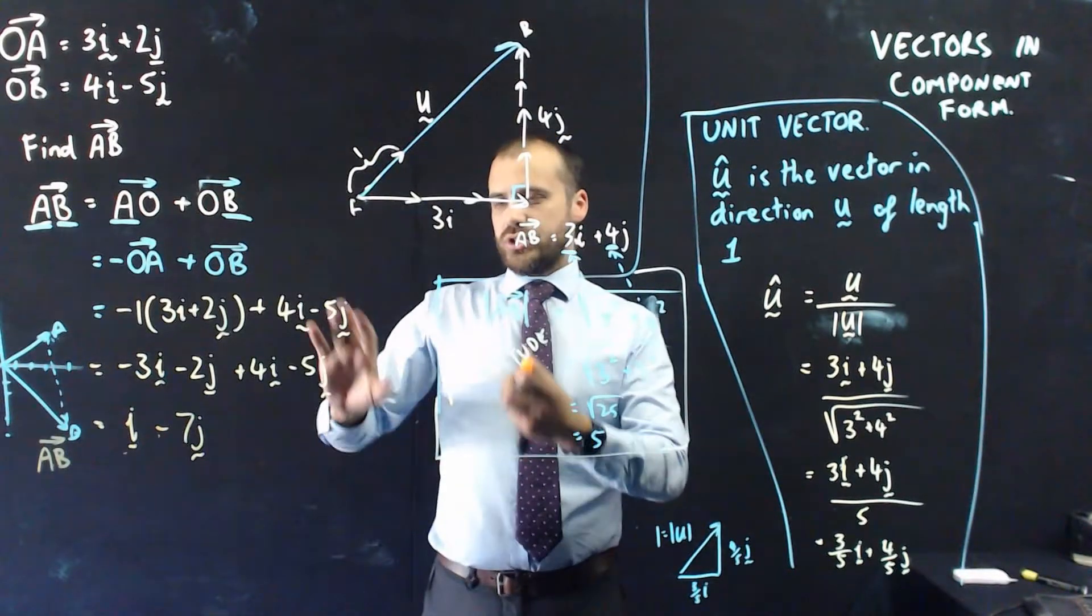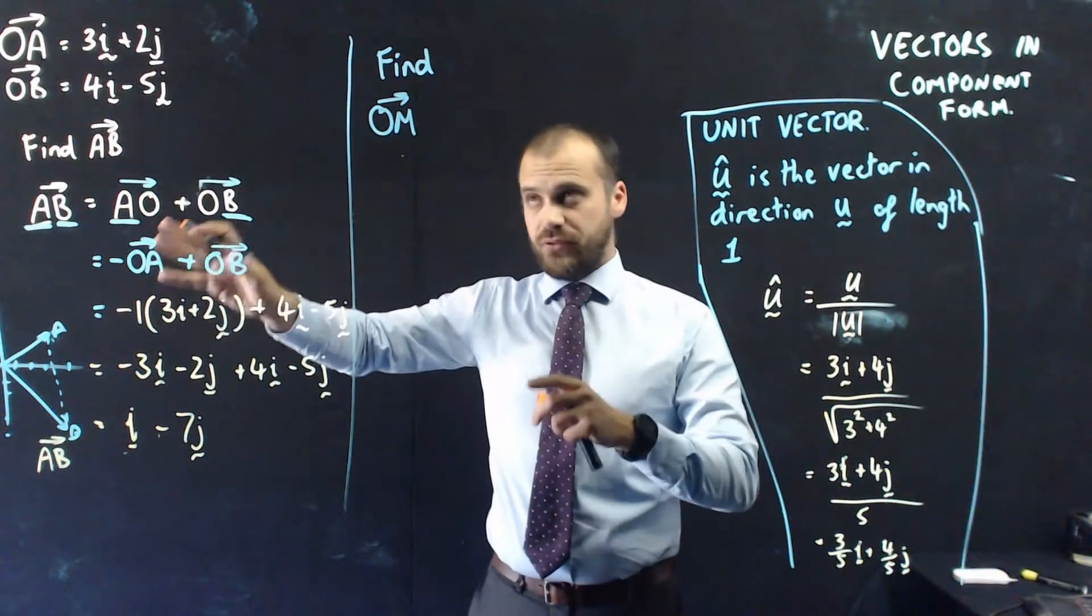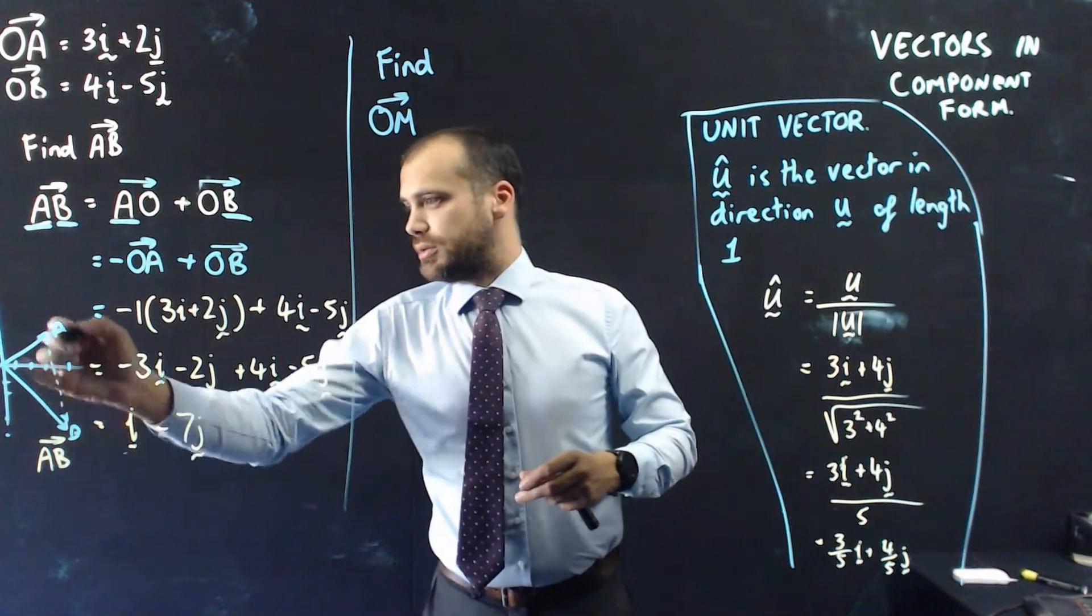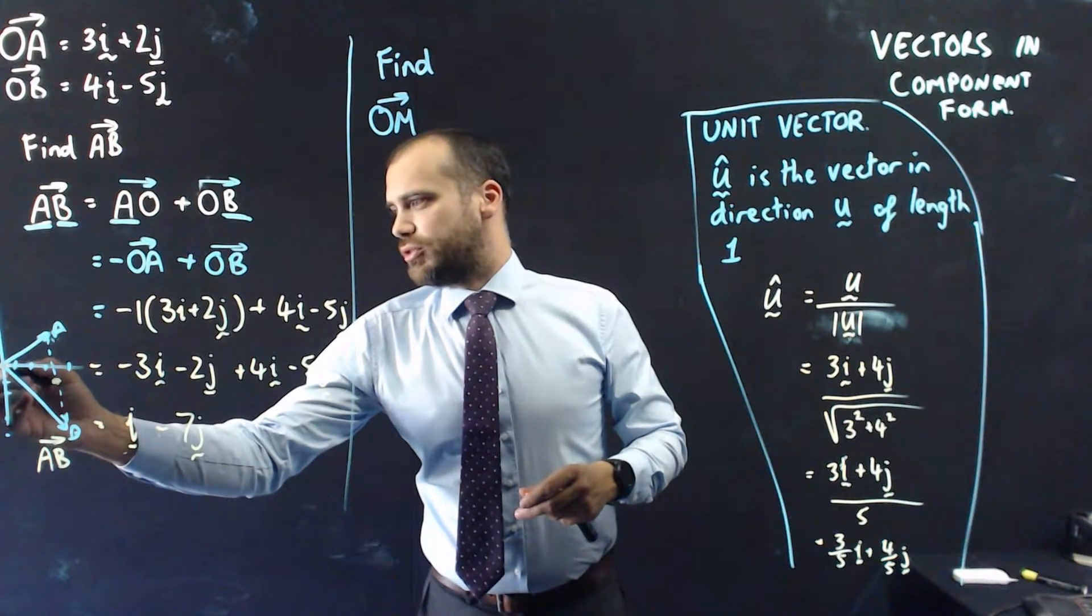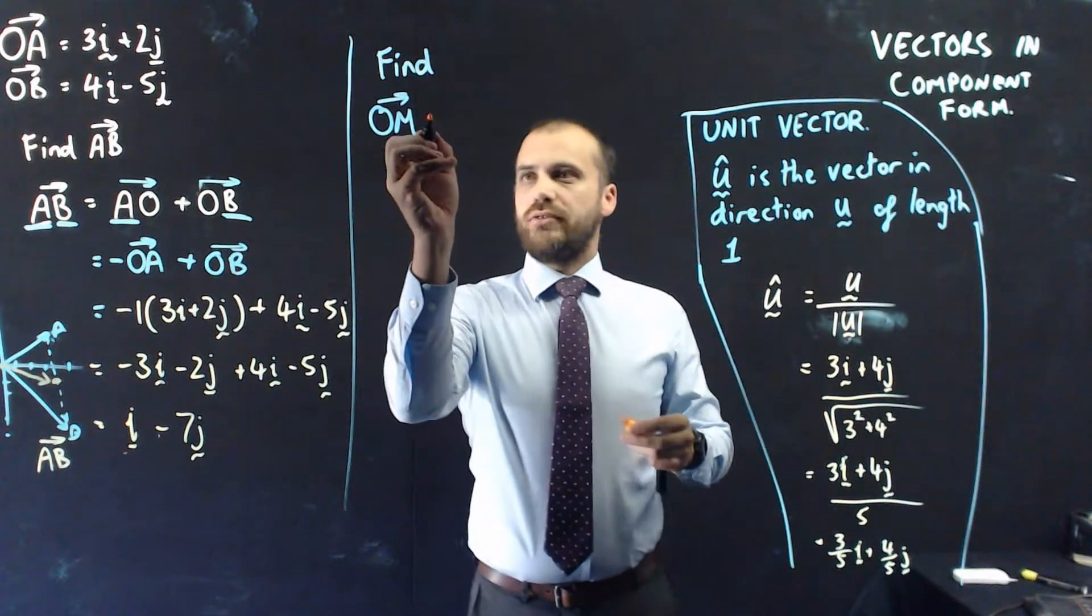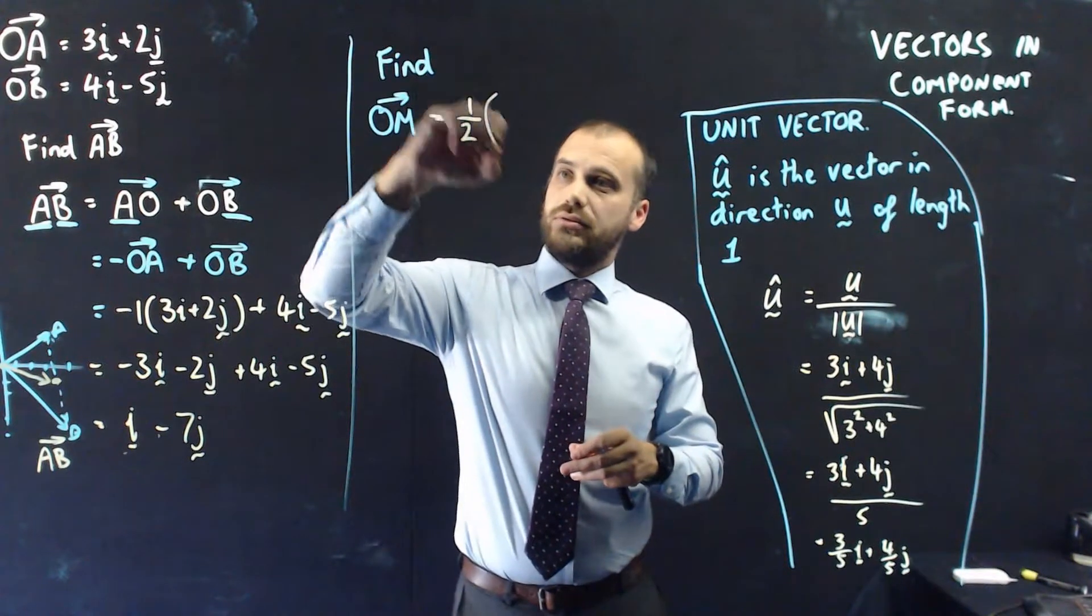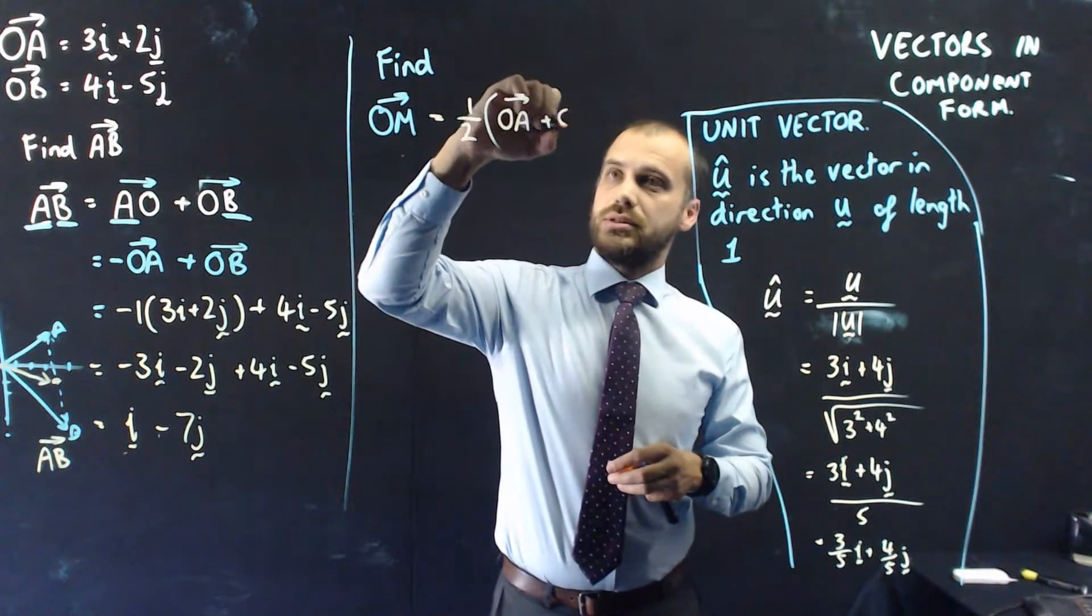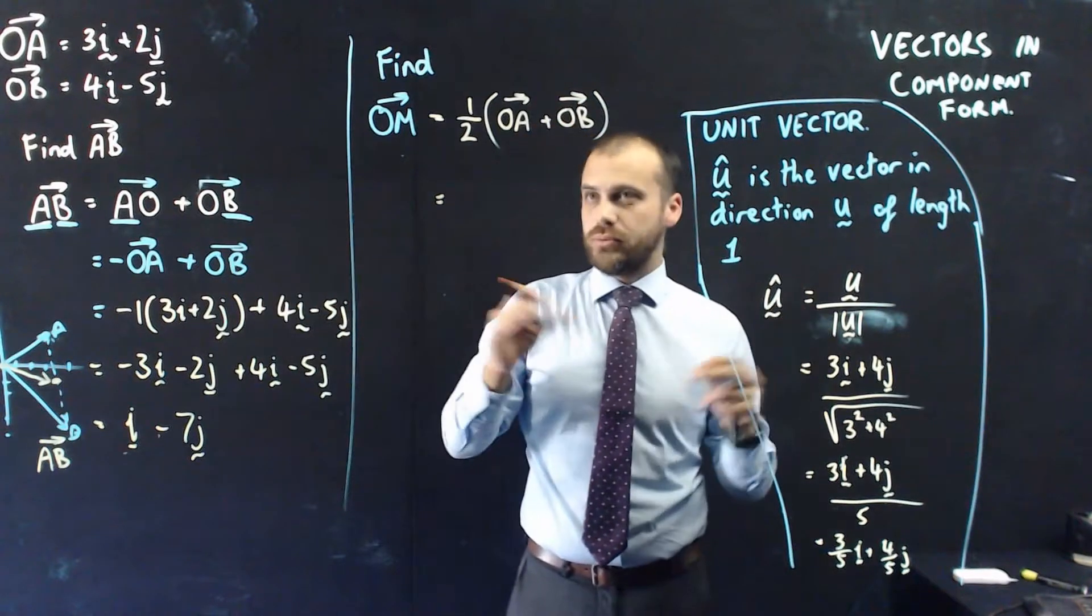All right, we can probably just do one more thing with that little bit of work. So, using the same numbers, using the same vectors, I can find OM. M being the midpoint between A and B. So, it's going to be here somewhere. And OM is the vector that goes from the origin to that point. So, that's what we're aiming for here. So, our formula for finding the midpoint vector is equal to 1 half OA plus OB. And given everything is in component form, very straightforward here.